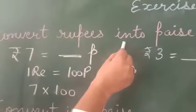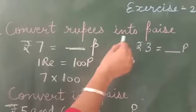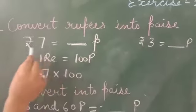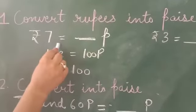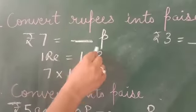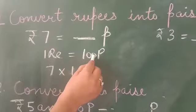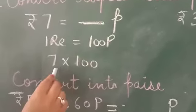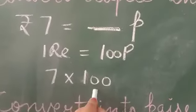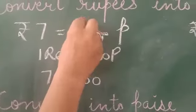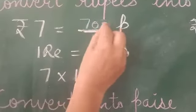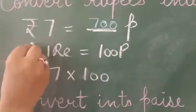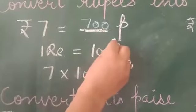Convert rupees into paise. You have to convert rupees into paise. First example is: 7 rupees is equal to dash paise. One rupee is equal to 100 paise, so you have to multiply 7 by 100. How many paise? 700. So the answer is 700. 7 rupees is equal to 700 paise.